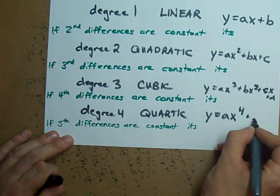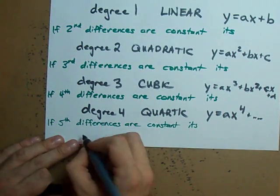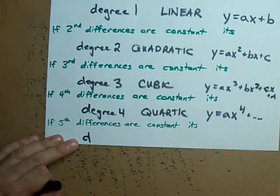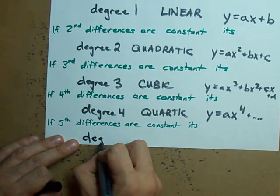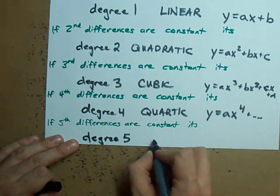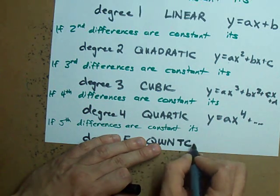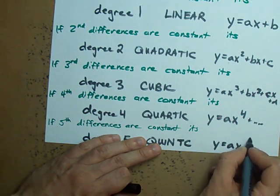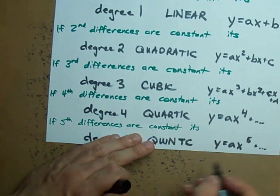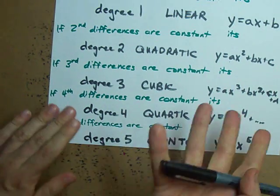And fifth differences are constant, which will probably be rare, it is degree 5 which we call quintic, and that will be y equals ax to the 5 plus a bunch of other stuff. Do you get that?